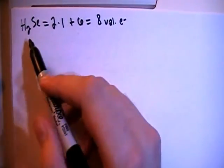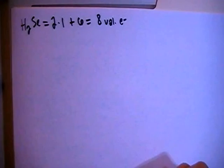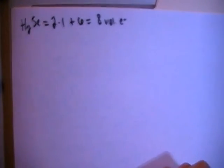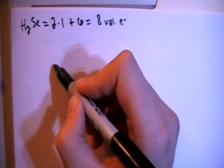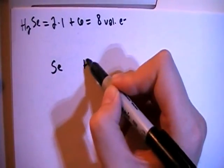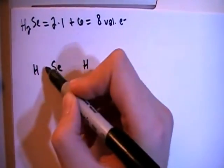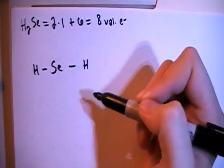Okay, so basically the hydrogens can only have a single bond, so we know that the selenium is going to be in the center. So let's go ahead and draw the selenium with the two surrounding hydrogens, and we can single bond the hydrogens to the selenium.